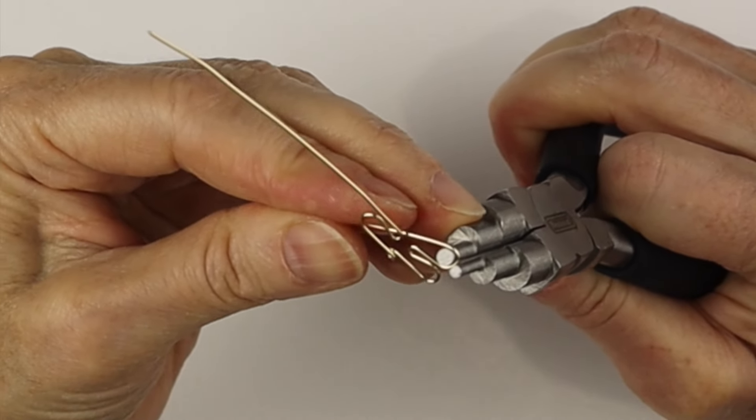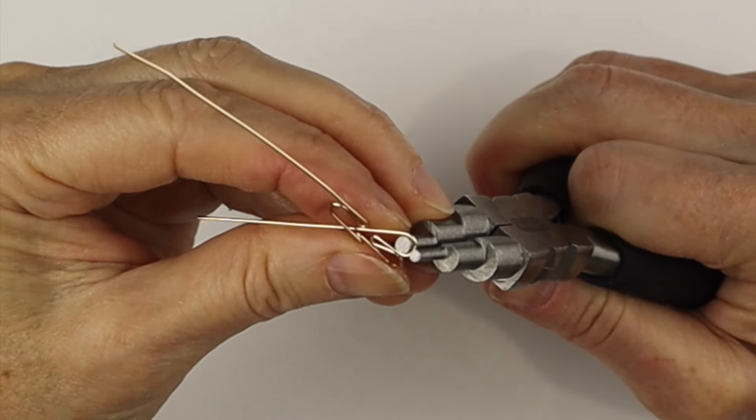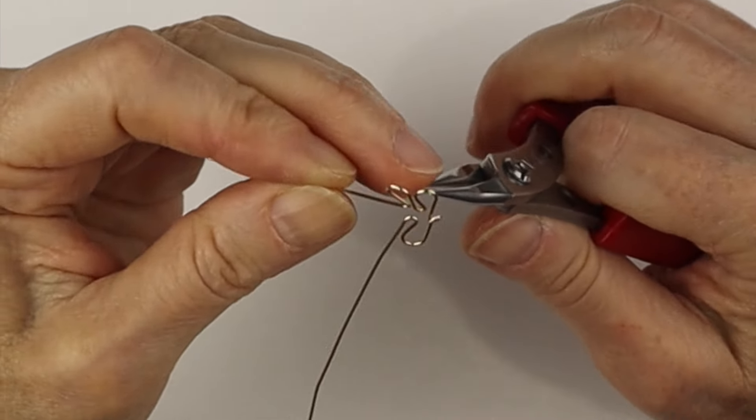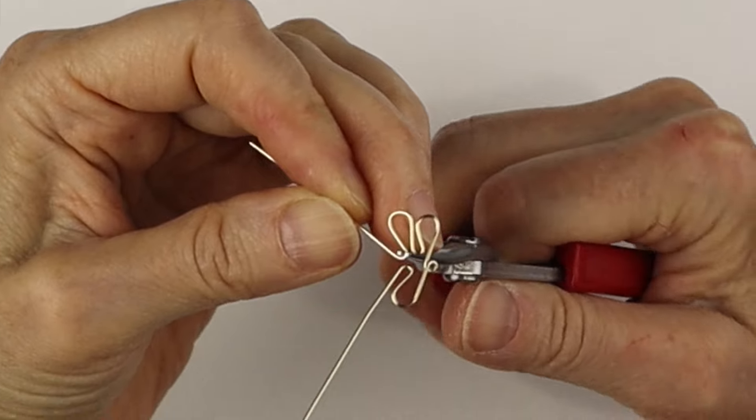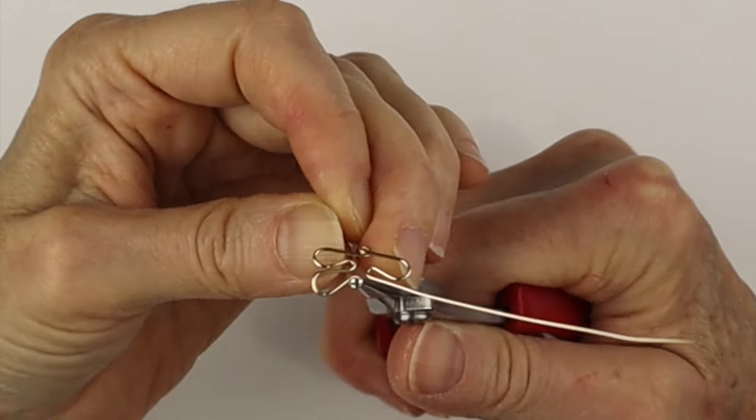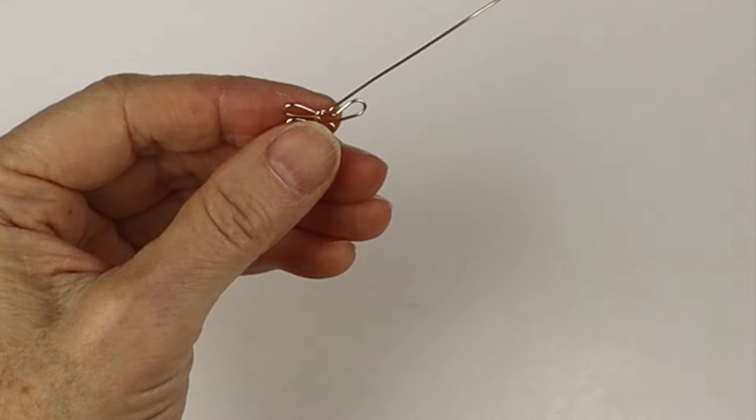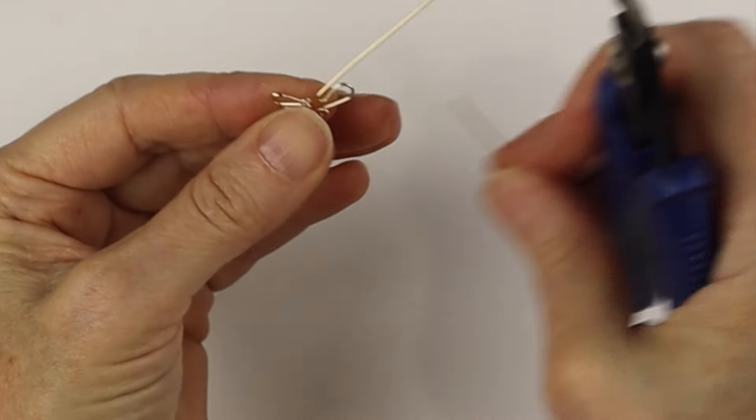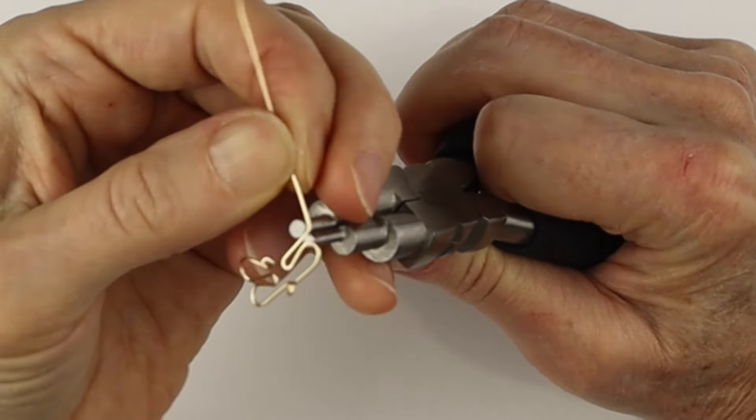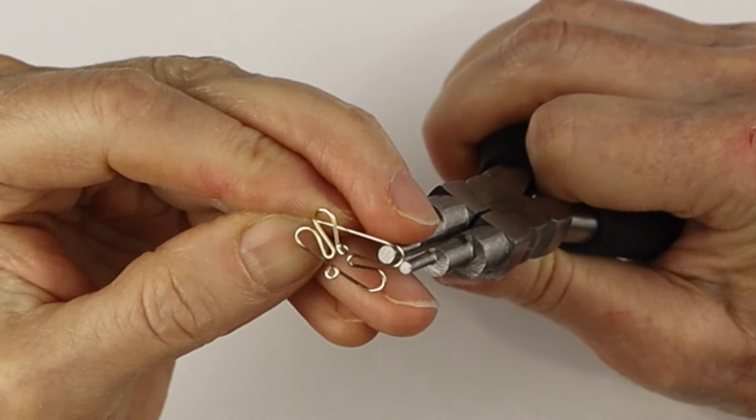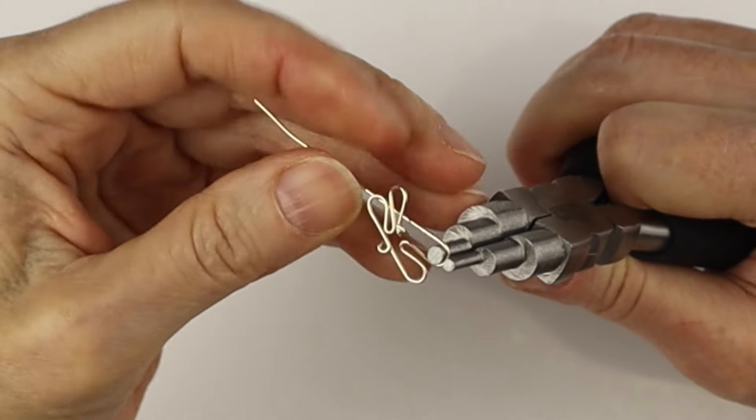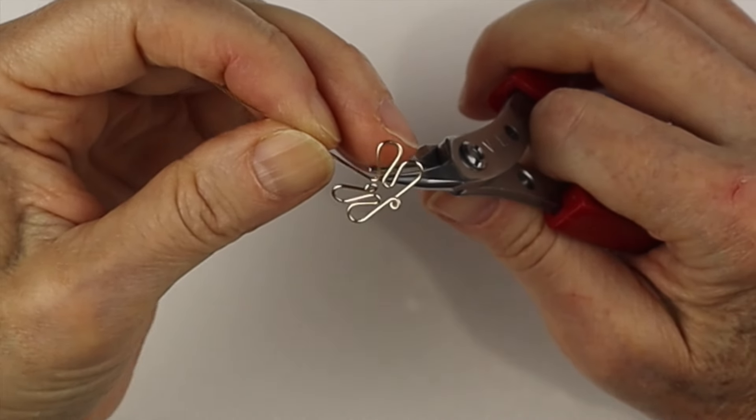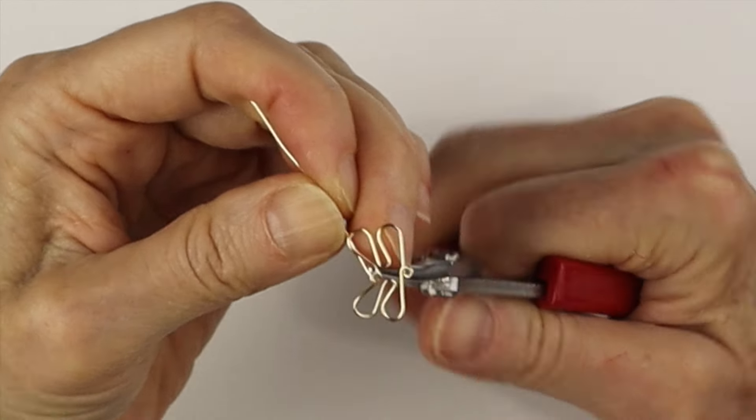I'll link up all the tools in the description below the video. Then get the round pliers to form a little loop in the center above where our first loop was. You want to make sure the loops are lined up. Then we'll do the same on the other side. Bring the wire around towards the center and get the fine round nose pliers to make that loop in the center.